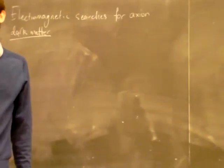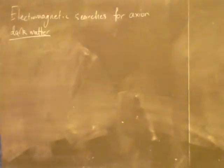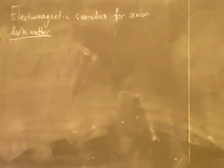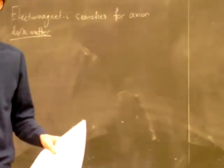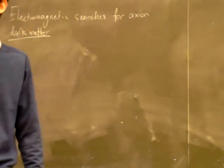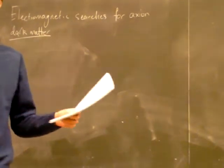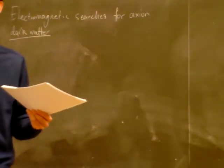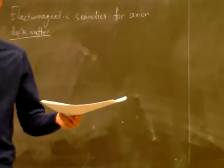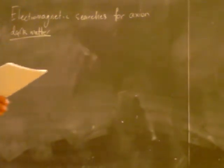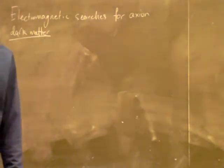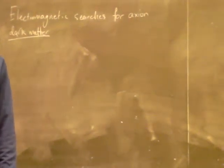I'm going to be talking about some theoretical work and some experiment proposals for detecting axion-like particle dark matter. We have very strong evidence that some form of dark matter is out there, but its microphysical properties are extremely uncertain. It could be anything across many decades of mass range, and from couplings all the way from purely gravitational to strong enough that it can't get through the atmosphere.